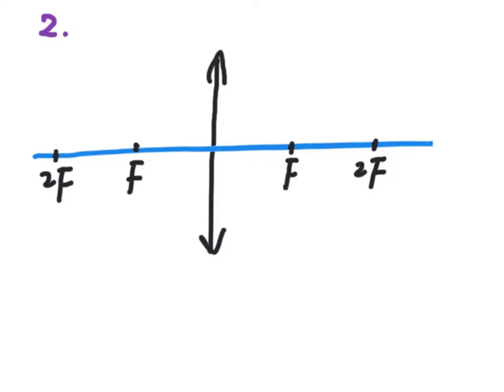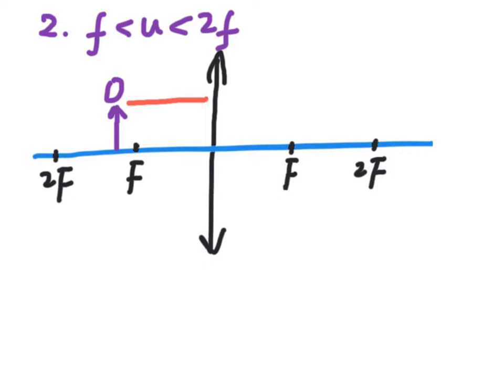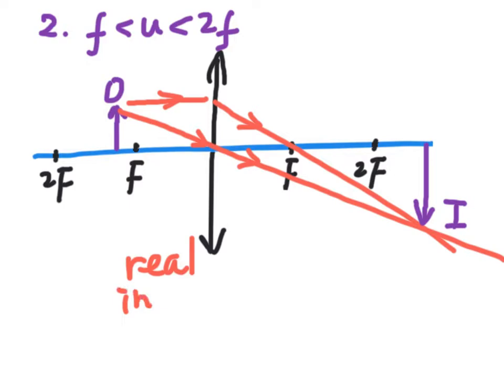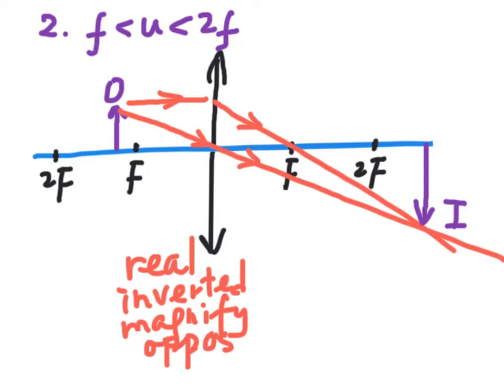Next, let's see what happens when the object is put between f and 2f — that is, the object distance u lies between f and 2f. Again, we use two special light rays and draw the image with an arrow. In this case, the image is real, inverted, and magnified. The image is on the opposite side from the object.